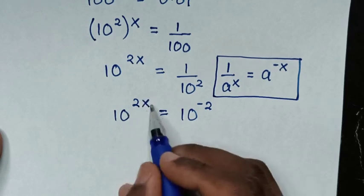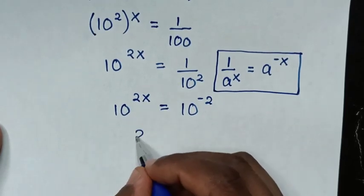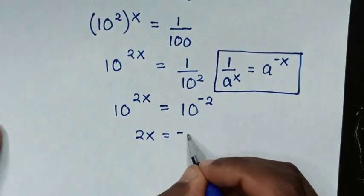Then as in here we have same base so we'll compare these powers. Then it will be 2x is equal to negative 2.